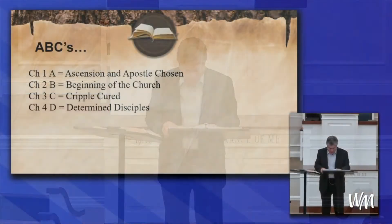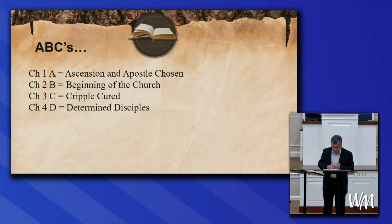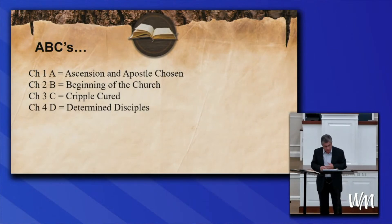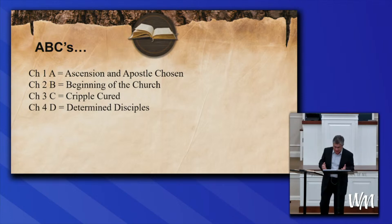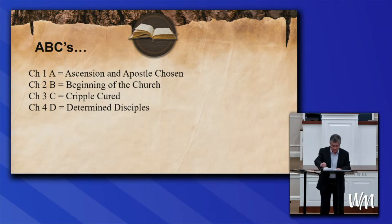These are what we're calling ABCs for the first four verses: A for the ascension and apostle chosen, B for beginning of the church, C for crippled cured, and D for determined disciples. We're going to find out a lot more about their determination today in response to what occurred last week in our class.